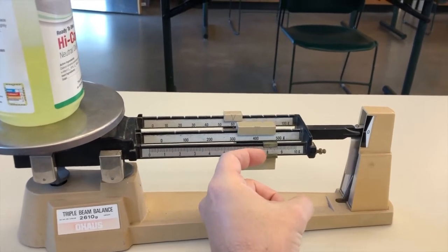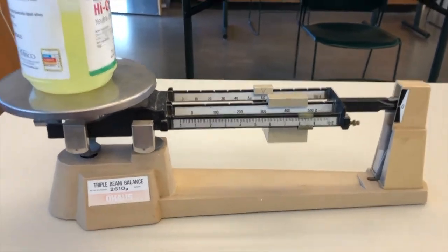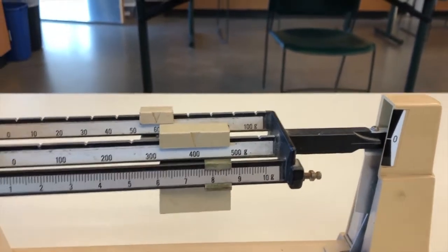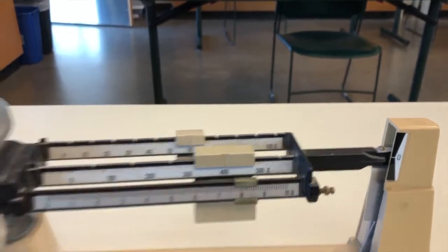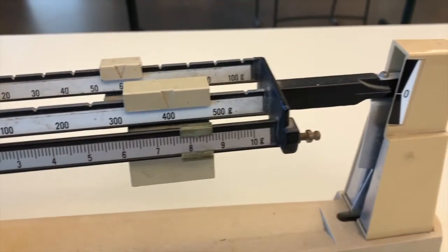If I took this balance to the moon and placed the same object on it, I would find the mass to be exactly the same. On the moon, the weaker gravity would pull the object down less, but it would also pull the slugs down less. The arm would balance in the exact same place. A balance gives you an accurate mass measurement regardless of how weak or strong local gravity is.